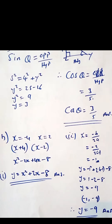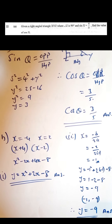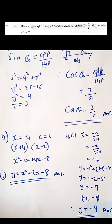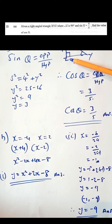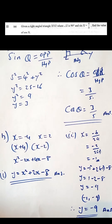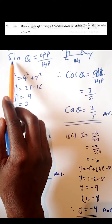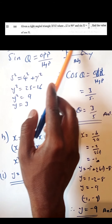Question 22: given a right-angle triangle XYZ where Z = 90°, and sin x = 4/5, find cos x. Since sin x = opposite/hypotenuse, the opposite side is 4 and the hypotenuse is 5.